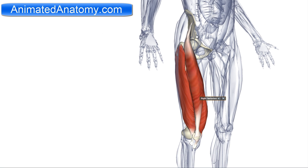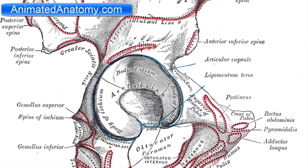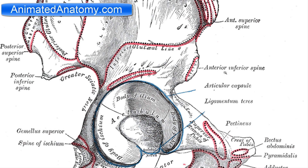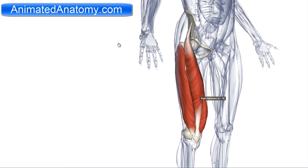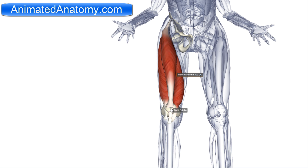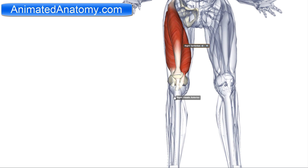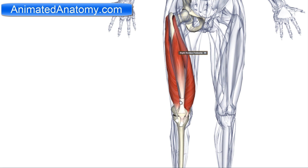The rectus femoris has its origin on the anterior inferior iliac spine — that is right here, not here. If we look at it from the front, it's right here. This was the anterior superior spine where the sartorius muscle had its origin. The insertion of this muscle is the patellar ligament, which then inserts into the tibial tuberosity on the tibia.